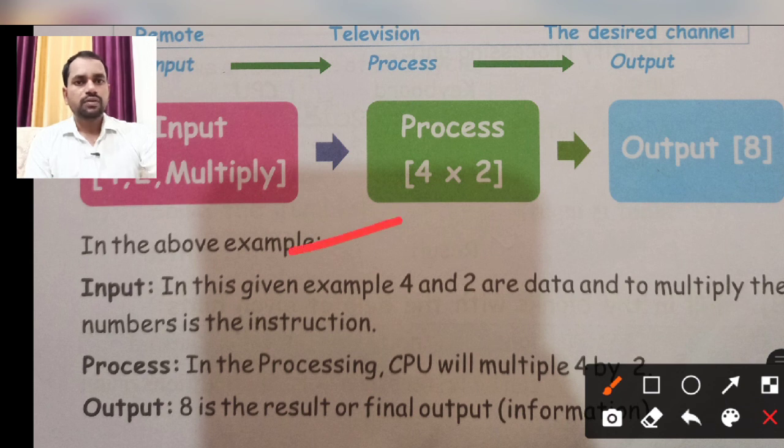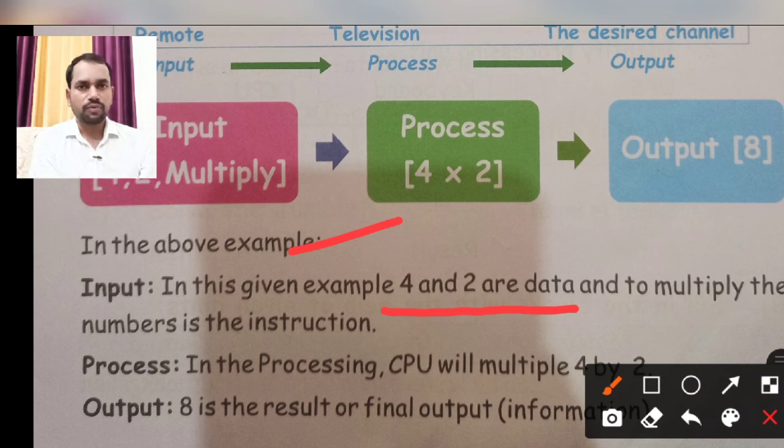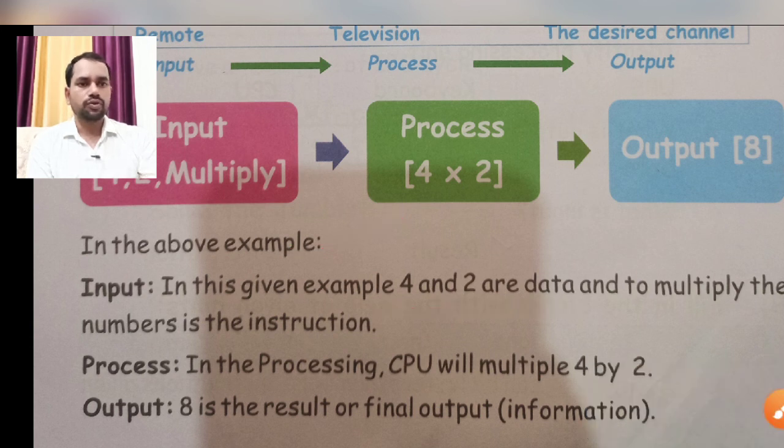In this given example, 4 and 2 are data which we perform. To multiply the number is the instruction. Then process: CPU does multiplication of 4 and 2. The answer is 8, which is the result of the final output information.